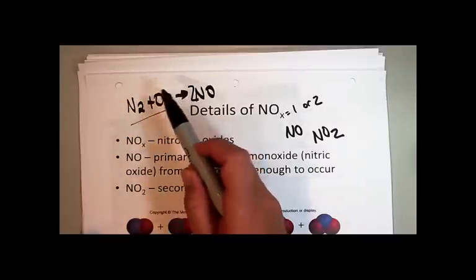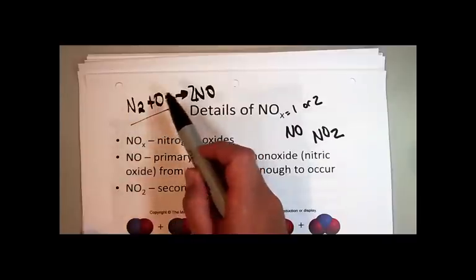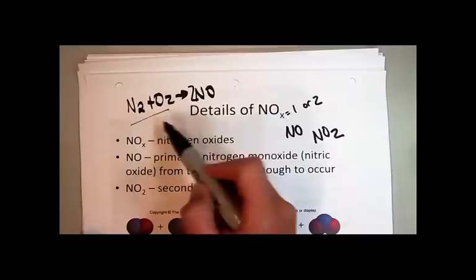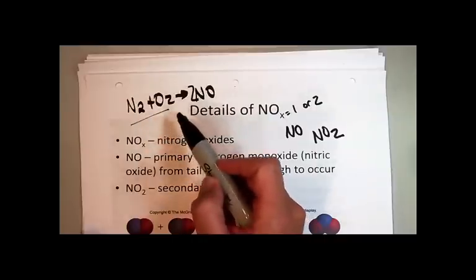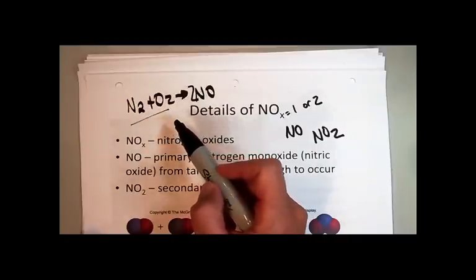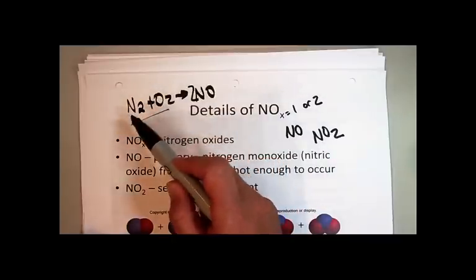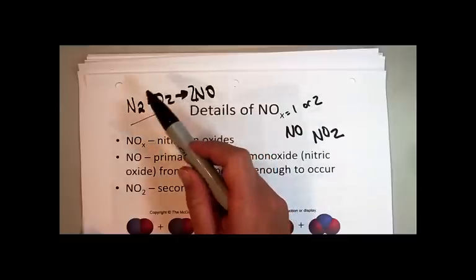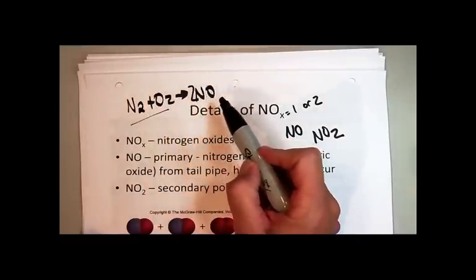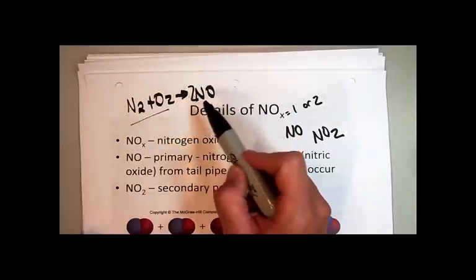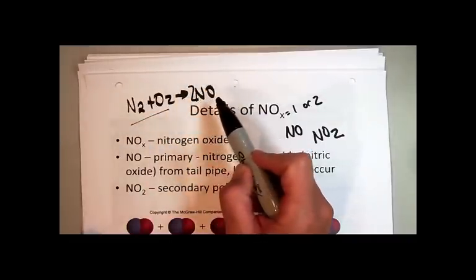And so, where is that gonna happen? Well, that happens in a combustion engine. Air is being drawn into the engine, and the fuel is combusting. Since the air has both oxygen and nitrogen, it's very hot when it combusts. And so, you can make a small amount, you don't make a lot because it takes a lot of heat for this to go, but you do make a small amount of nitric oxide or nitrogen monoxide.